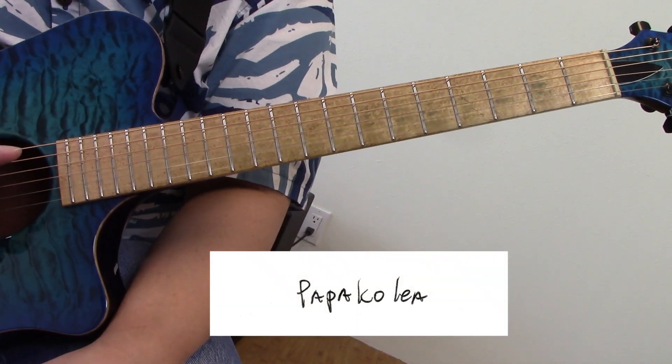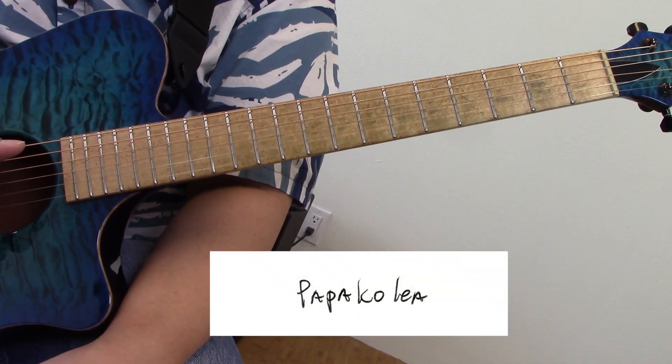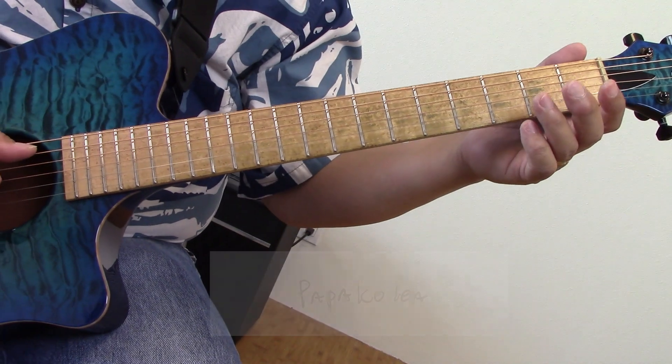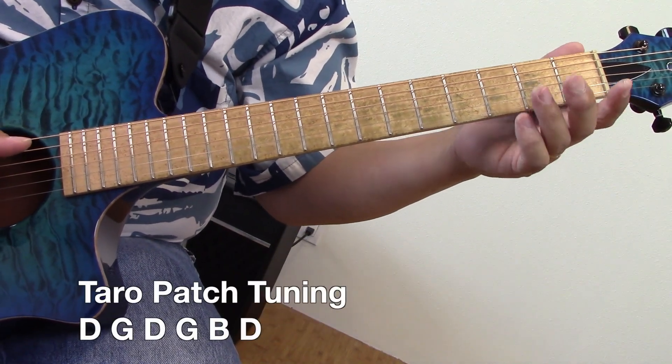So here's a close-up. Today I'm going to teach you a song called Papa Kolea in open G tuning. This is the second song that Raymond had done in his five-song medley. I'm going to teach you in little phrases.